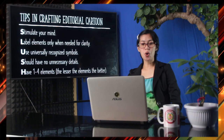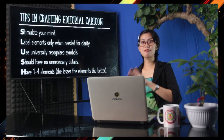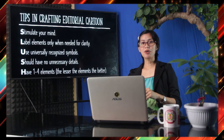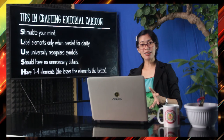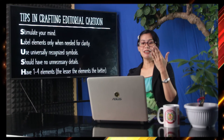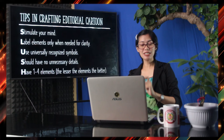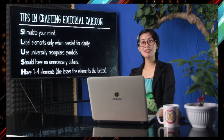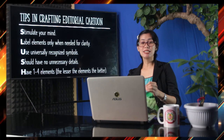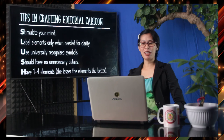S is to have no unnecessary details — unlike a poster where you fill it with designs and colors to make it attractive, in an editorial cartoon you must limit the details. If something is not needed or not related to your editorial cartoon, don't include it. H is one to four elements — the lesser the elements, the better. Fewer symbols keep the focus on the message or opinion you want to express.